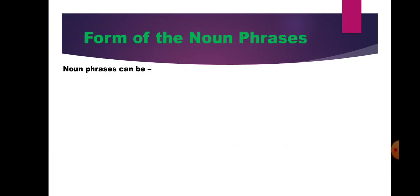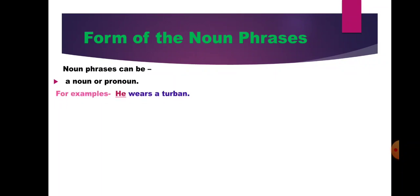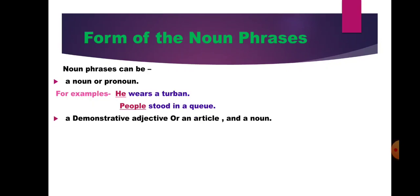Forms of the noun phrase — in which form you will find noun phrases in a sentence. It can be a noun or pronoun. For example: 'He wears a turban.' 'People stood in a queue.' In both sentences, the words he and people are also forms of noun phrases. Second, a noun phrase can be a demonstrative adjective or an article and a noun. So you can get noun phrase in this form also.